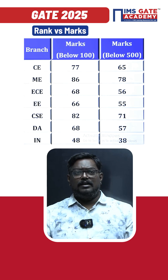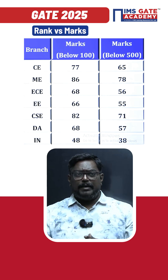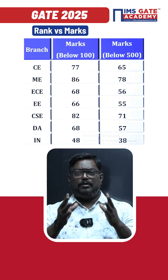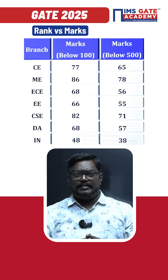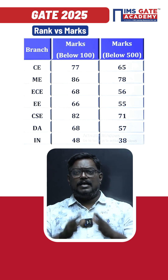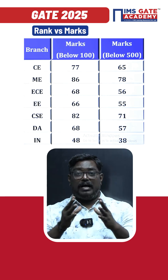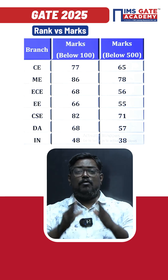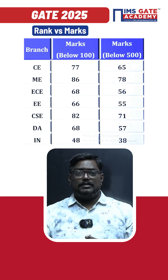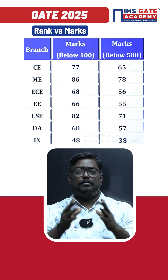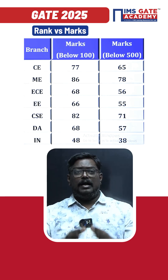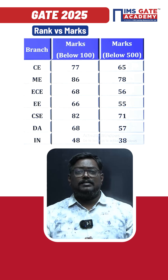For the DA paper, for below 100 it is 68 marks and for below 500 it is 57 marks. For Instrumentation Engineering (IN) students, 48 marks is the cutoff for below 100 and 38 marks for below 500.